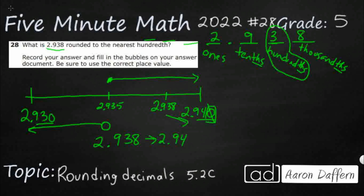Now, if you want to learn how to do that without all of this drawing, you can always underline the place you're going to, then look at the digit to the right. Remember, if it's 5 and up, this is going to make the underlined digit change up by 1. And it does — so it's going to be 2 and 94. Then this digit always goes away; it becomes a zero.